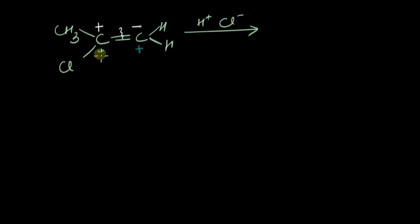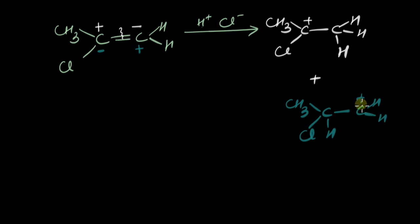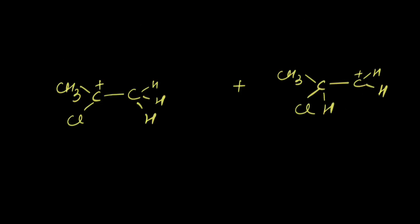What would be the product in each case? In the first case we get this carbocation, while in the second case we get this carbocation. So the one that is more stable would form the major product. Which of the two would be more stable? Why don't we rewrite them and then compare their stabilities. These are the carbocations, and if I try and compare their stability, I see the left one is a two degree carbocation while the right one is a one degree carbocation.